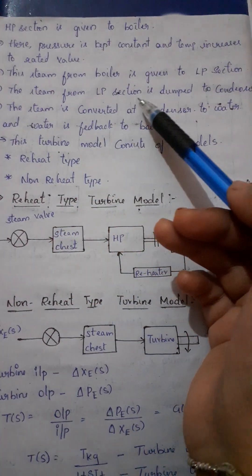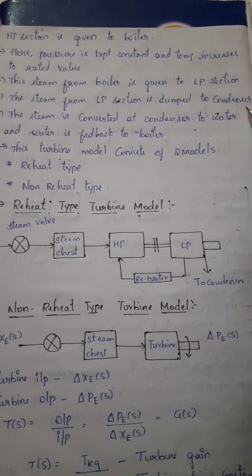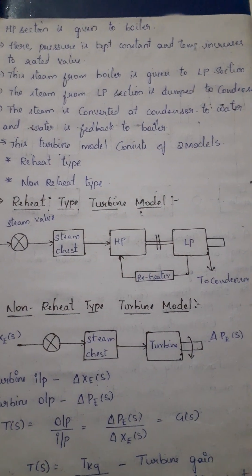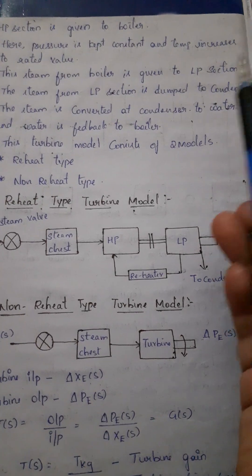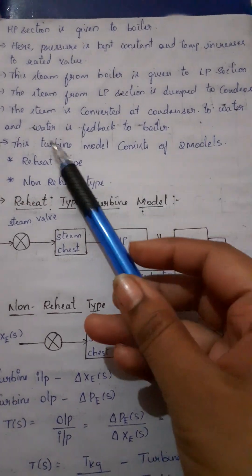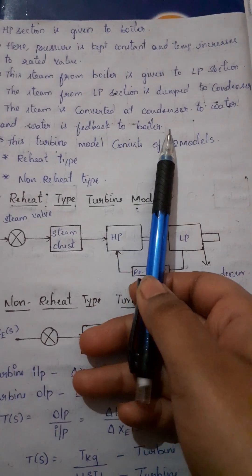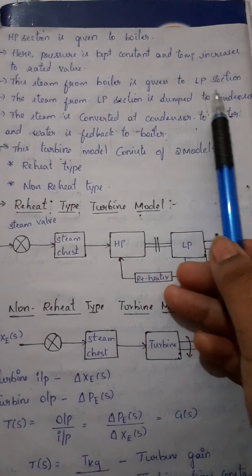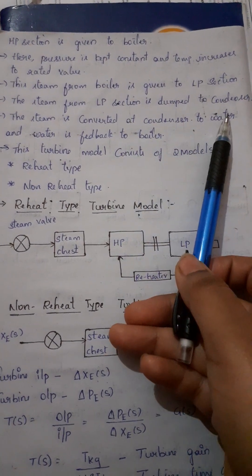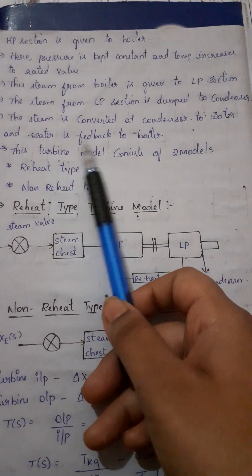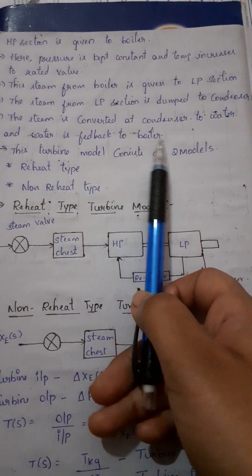The steam from LP section is dumped to condenser. Finally, we have a condenser. The steam is converted at condenser to water and water is fed back to the boiler. When I use the steam, I use the boiler to boil water.